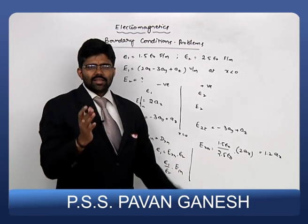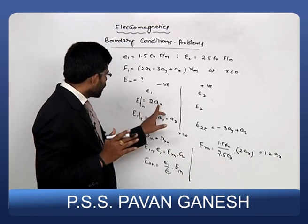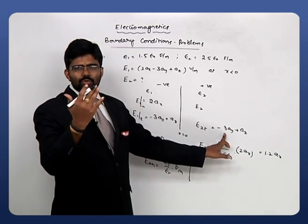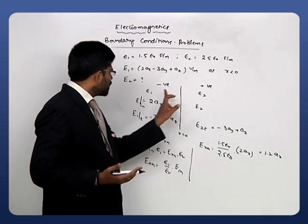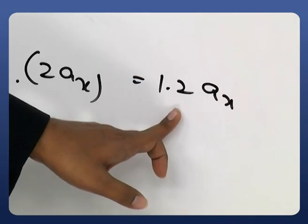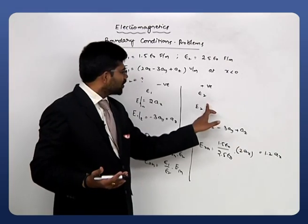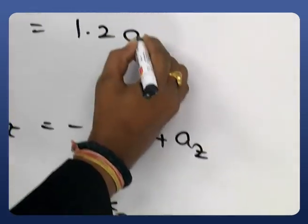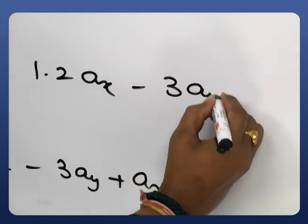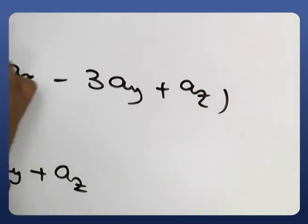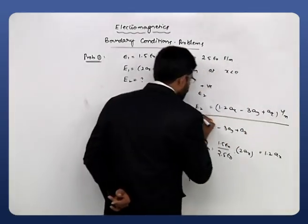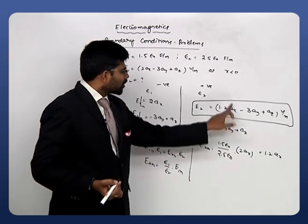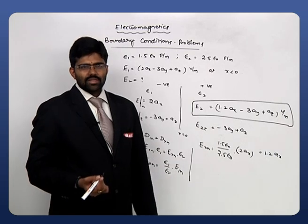The electric field was decomposed into normal and tangential components. The tangential component passes unchanged through the boundary, while the normal component magnitude changed from 2ax to 1.2ax. Combining both, E₂ = E₂n + E₂t = 1.2ax − 3ay + az V/m. This is the electric field in medium 2.